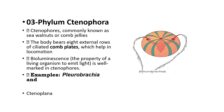The next phylum is Ctenophora, commonly called sea walnuts or comb jellies. The body has 8 rows of comb plates used for locomotion. Ctenophores show bioluminescence — the property of a living organism to emit light. Examples are Pleurobrachia and Ctenoplana.